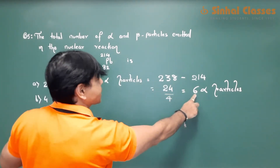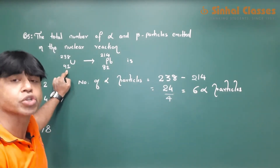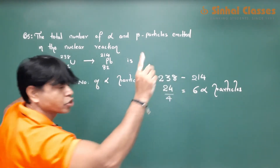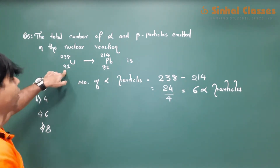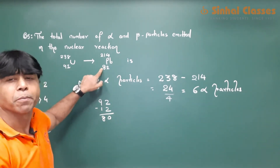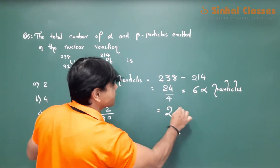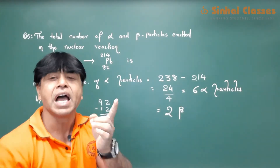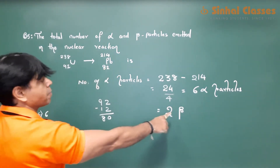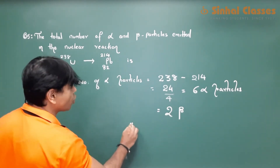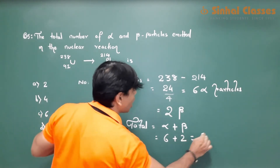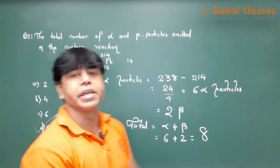If there are 6 alpha particles, the atomic number should reduce by 12 — since 6 times 2 is 12. So 92 minus 12 should be 80. But it is 82, meaning there are 2 beta particles coming out, because every beta particle increases the atomic number by 1. So total alpha and beta particles will be 6 plus 2 equals 8. The answer is D.